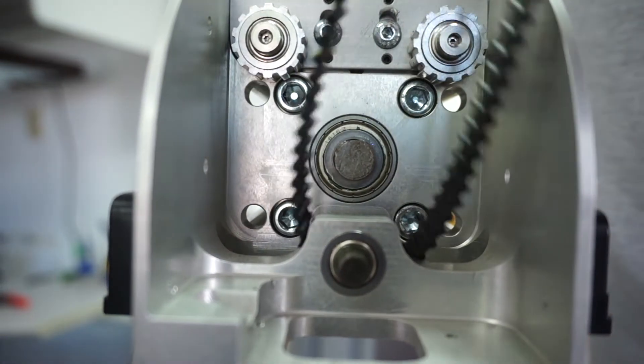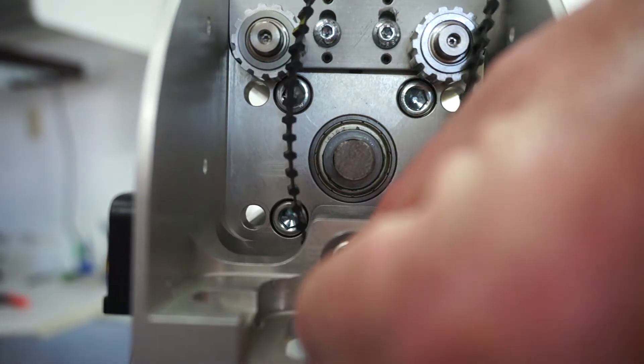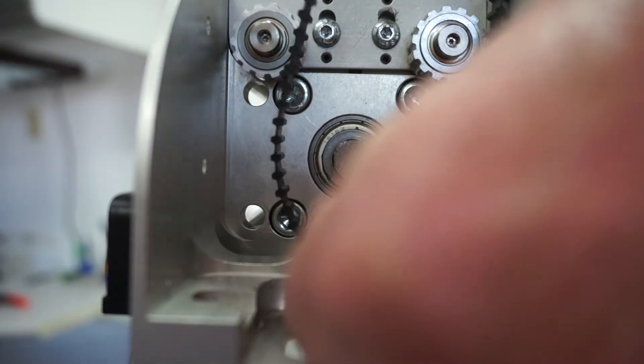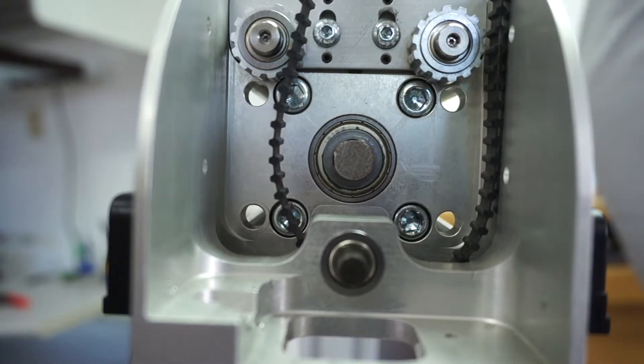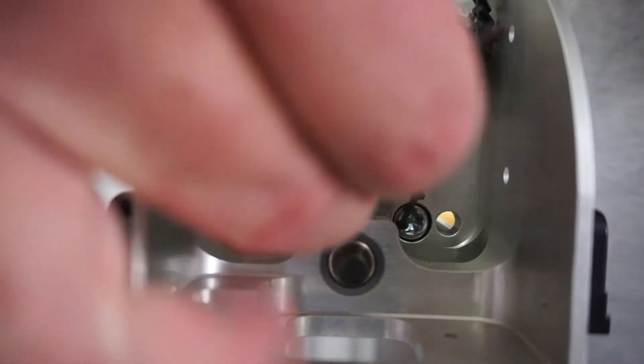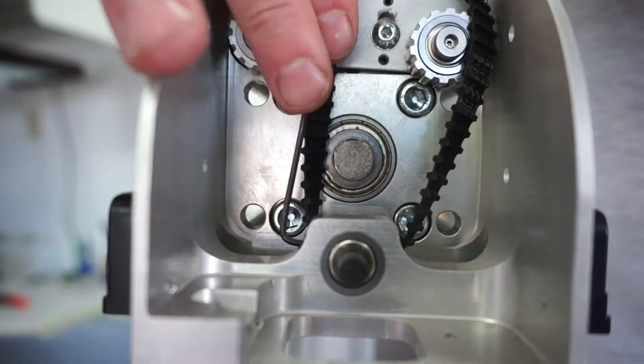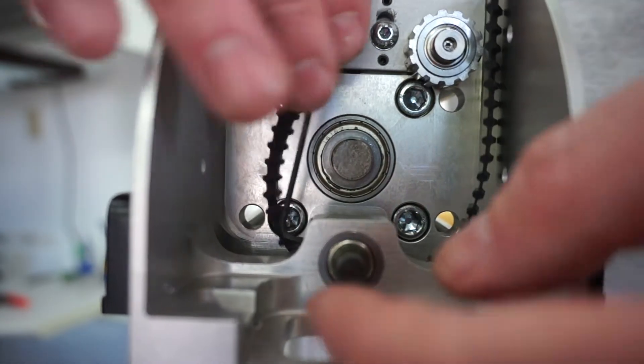Now we've gotten to where we're with the belt here. As you can see there's a gear down below that it is attached to. So there's an Allen screw, a set screw, that needs to be loosened here.